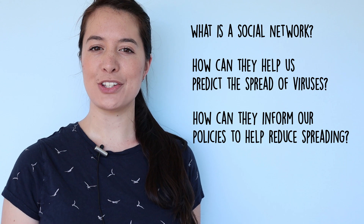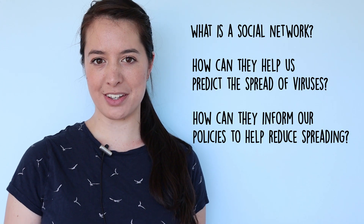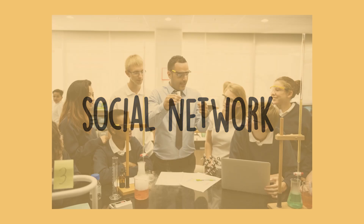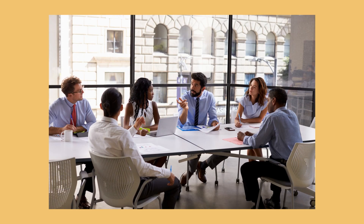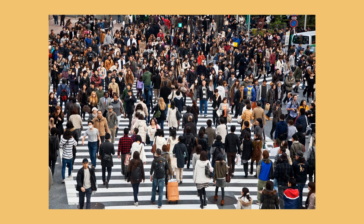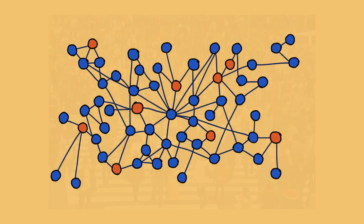First, what is a social network? I'm not talking about Facebook and Twitter, but rather a computational tool used to track human interactions. Simply put, a social network is a group of people who interact — this could be a classroom, a business, or an entire city. To make analyzing their behavior easier, we represent them as a graph, where each dot or node represents a person and the lines connecting them represent their connections to other people.